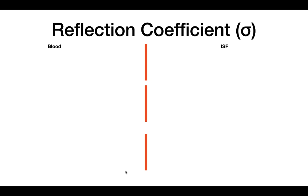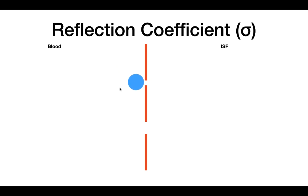So what is the reflection coefficient? In order to understand that, let's look at a demonstration. Let's say we have a large particle, and this is the vessel wall. What we see with this vessel wall is that we have two gap junctions — a small gap junction and a large one.